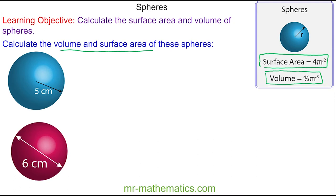We'll begin by working out the volume of this sphere where the radius is 5 centimeters. We'll substitute this in place of the radius, so the volume is four-thirds of π multiplied by 5 cubed. The first thing we'll do is work out 5 cubed, which is 125.